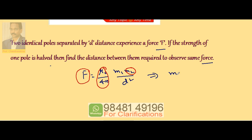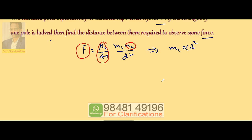This implies M1 proportional to D square. We need the new distance of separation so that force is same. Therefore M1 by M1 dash equals D by D dash whole square.